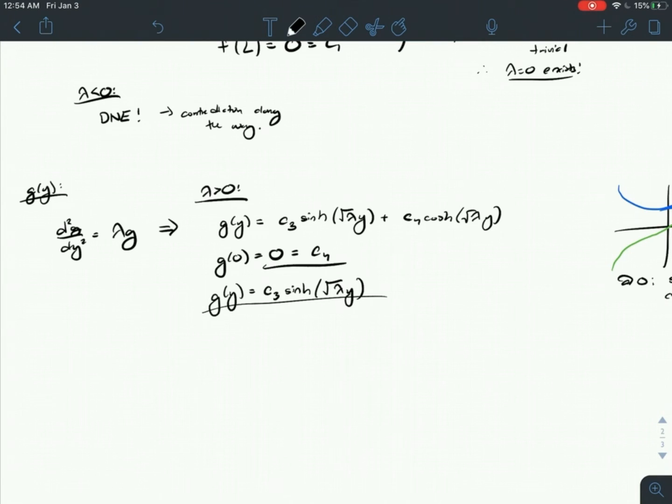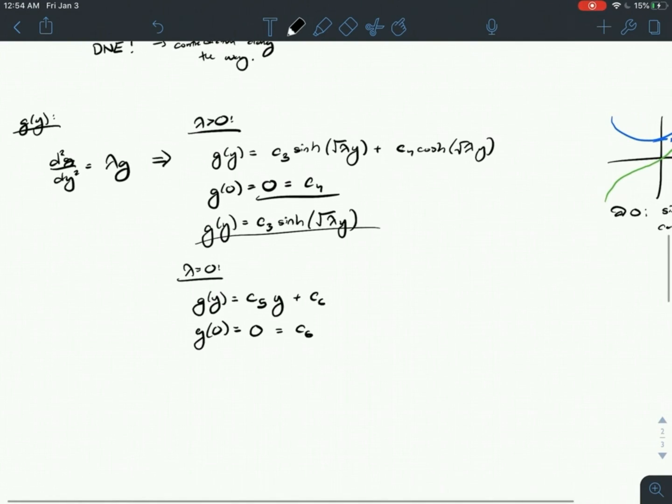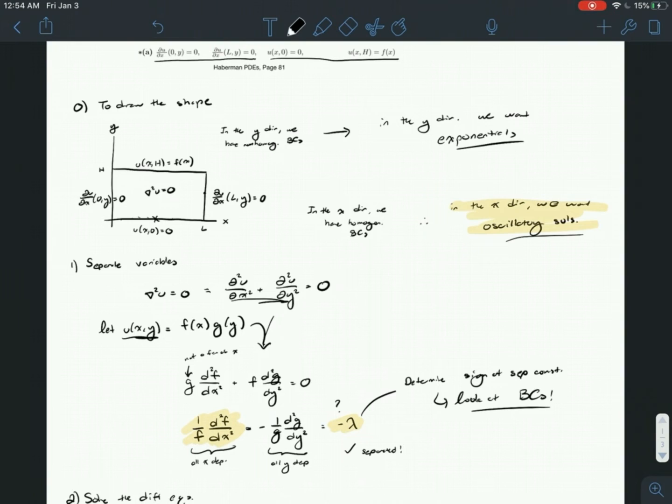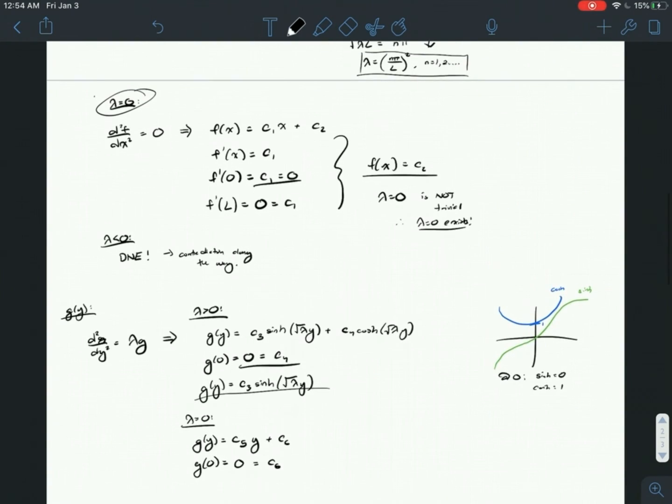If we go through and check for lambda equals zero, g(y), similar to above, is simply equal to C₅y + C₆, where g(0) equals zero. So C₆ equals zero. Evaluating the other boundary condition checks out because we don't know what f(x) is. We don't know this function f(x), so therefore lambda equals zero must also exist, which basically doubly confirms from earlier.